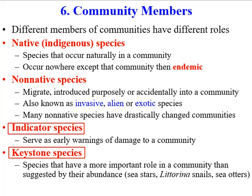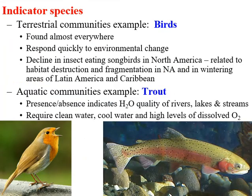Keystone species are involved in many different interactions. If you remove a keystone species, they influence many other species well beyond what their numbers or biomass would suggest. They're much more important than they appear to be based on how many there are. We'll look at examples of indicator species and keystone species, and then we'll be done with this section.